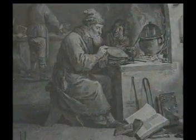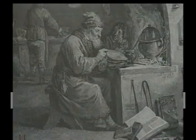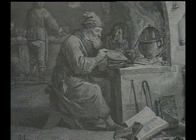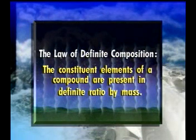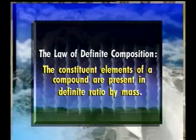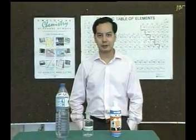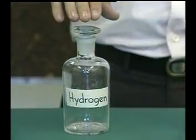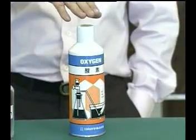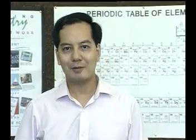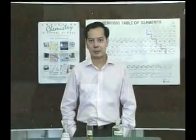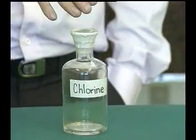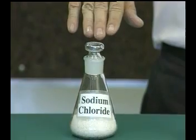By the 19th century, scientists agreed that all compounds have definite composition. Their constituent elements are present in a definite mass ratio. Take the compound water — hydrogen and oxygen are present in a 1 to 8 mass ratio. For every gram of hydrogen, there are 8 grams of oxygen. For the compound sodium chloride, sodium and chlorine are combined in a 1 to 1.54 mass ratio.